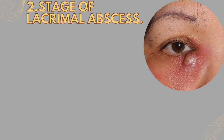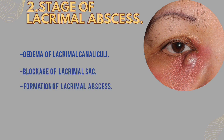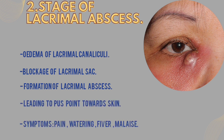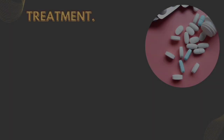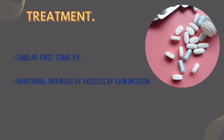If the stage of cellulitis is not treated, this will lead to the stage of lacrimal abscess. In the stage of lacrimal abscess, there will be edema of the canaliculi, which will block the lacrimal sac and form the lacrimal abscess, leading to pus pointing towards the skin. The symptoms presented are pain, watering, fever, malaise, etc. Treatment in the second stage is similar to the first stage with additional drainage of the abscess with skin incision.